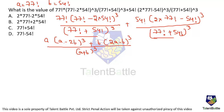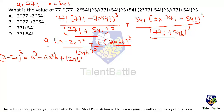Let's try to solve the numerator so we can cancel with the denominator. Expanding (a − 2b)³ using the formula (a − b)³ = a³ − 3a²b + 3ab² − b³, we get: a³ − 6a²b + 12ab² − 8b³. We also need to multiply this expansion by a.